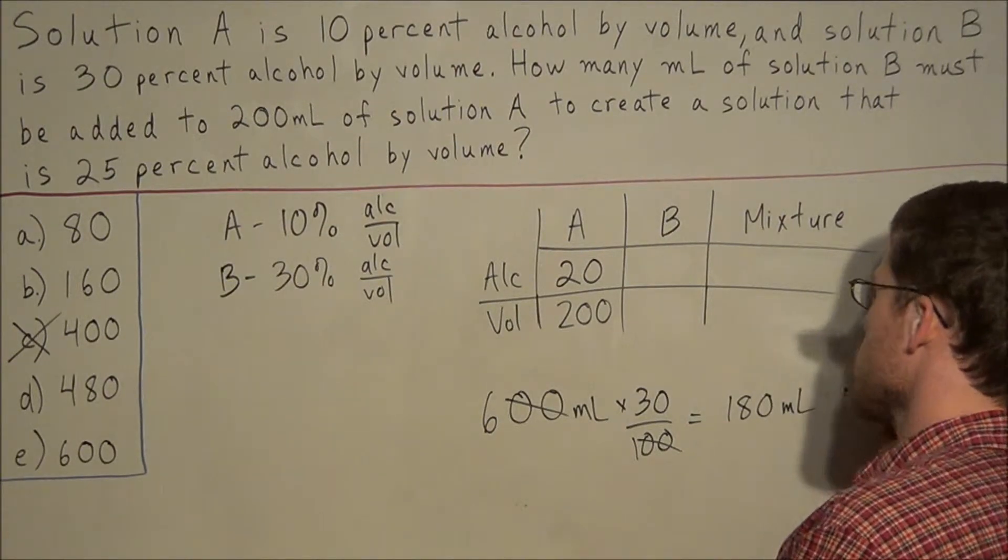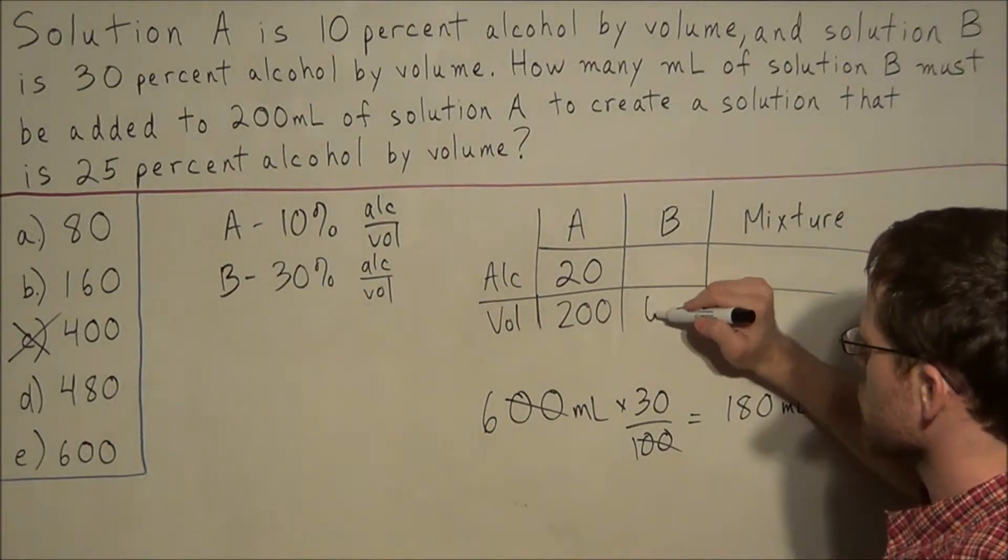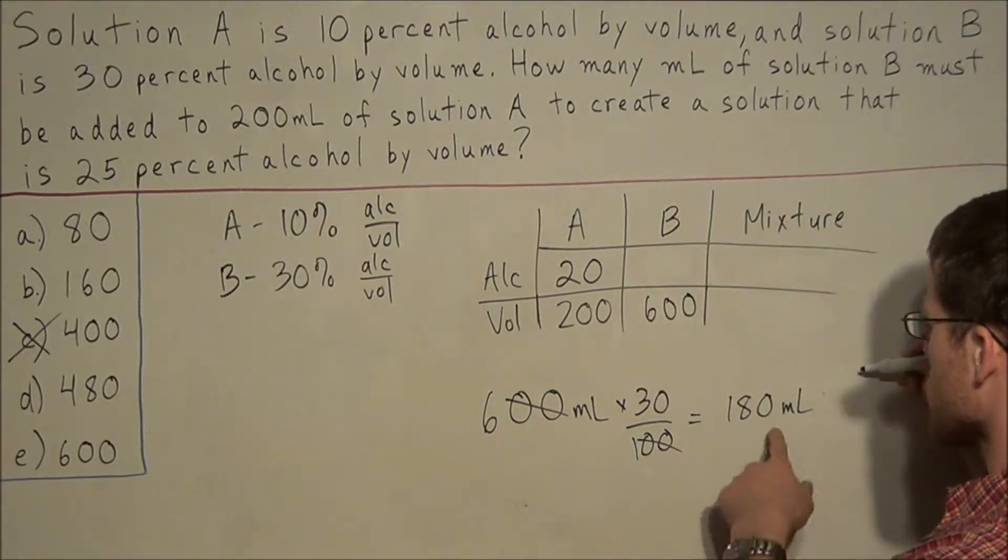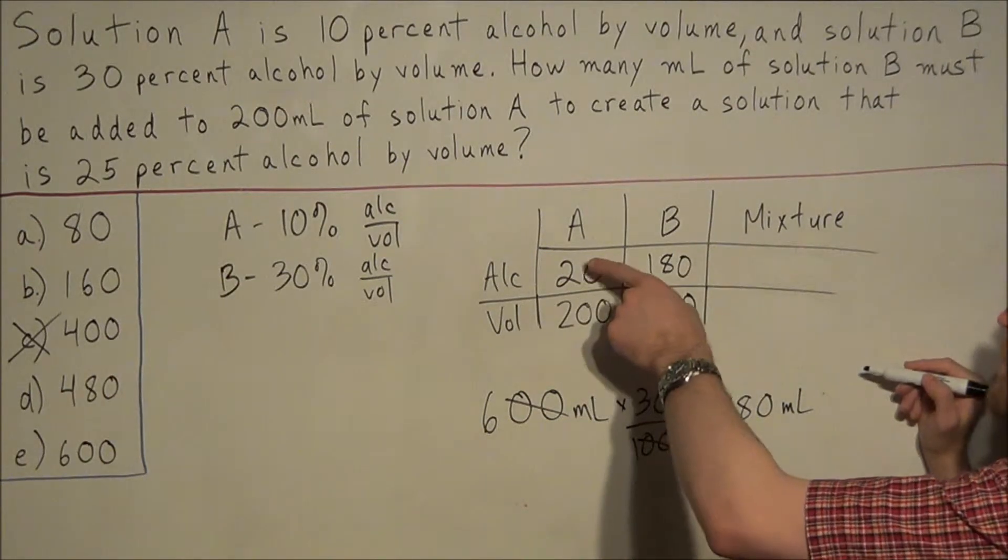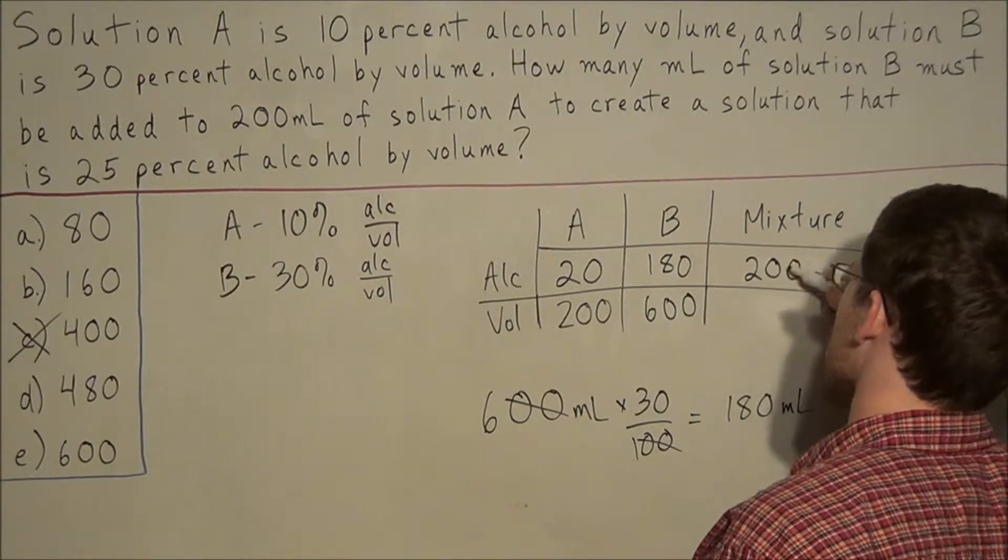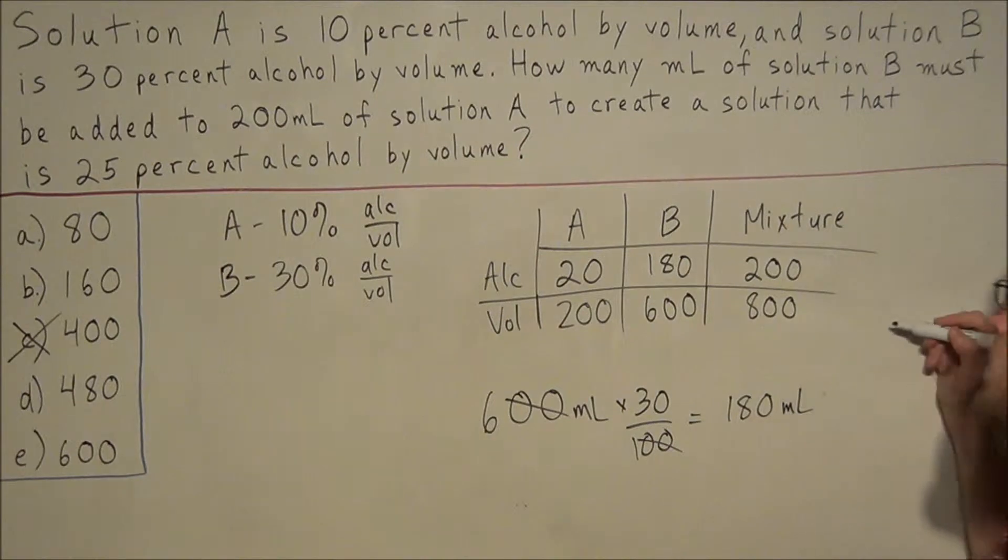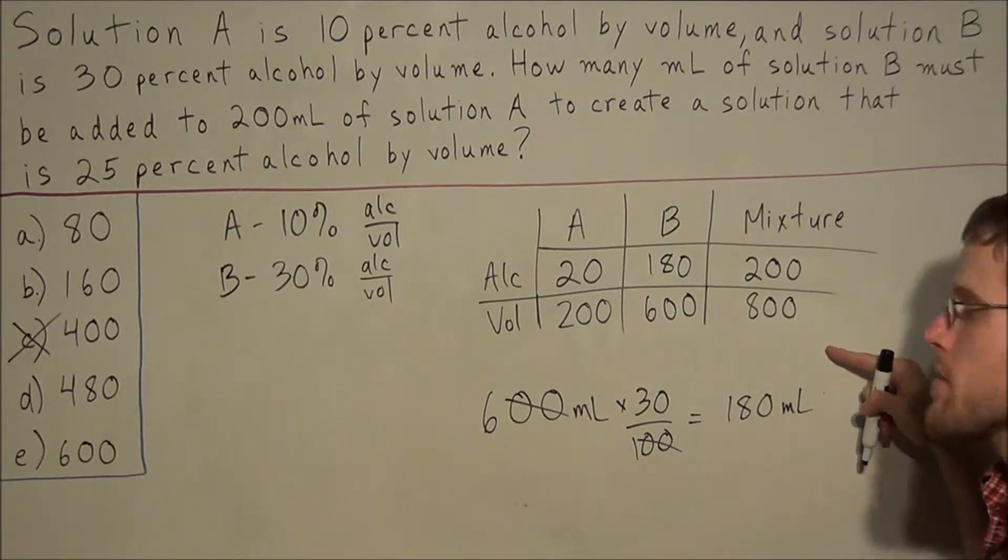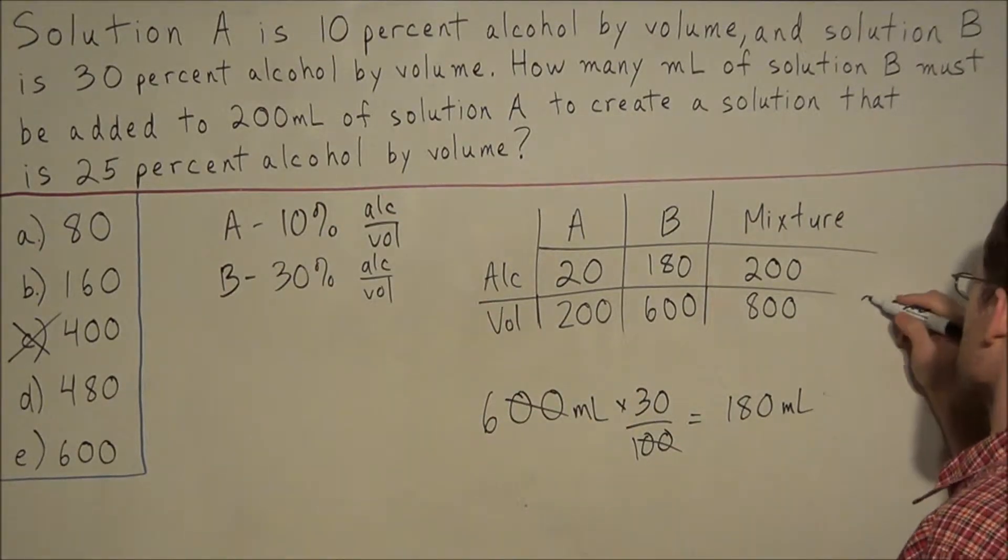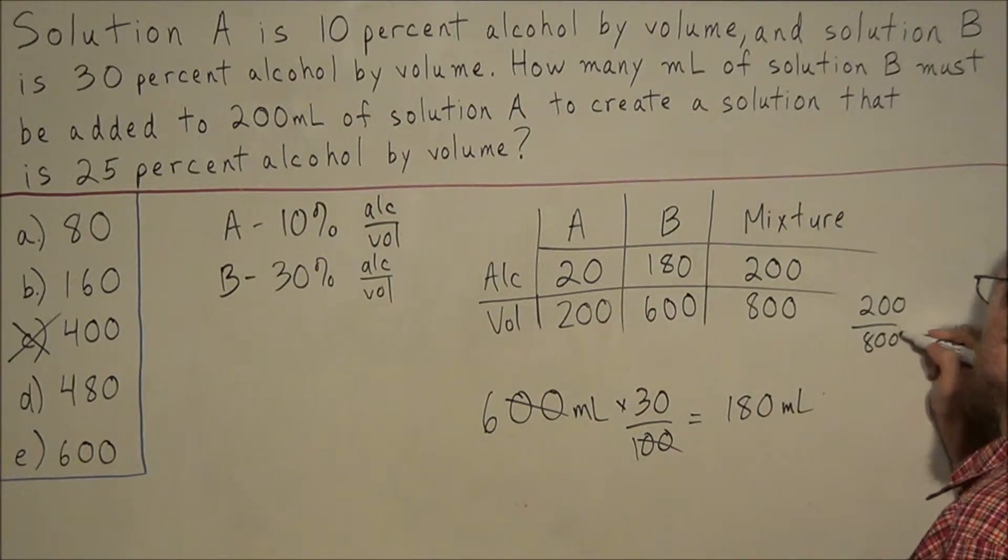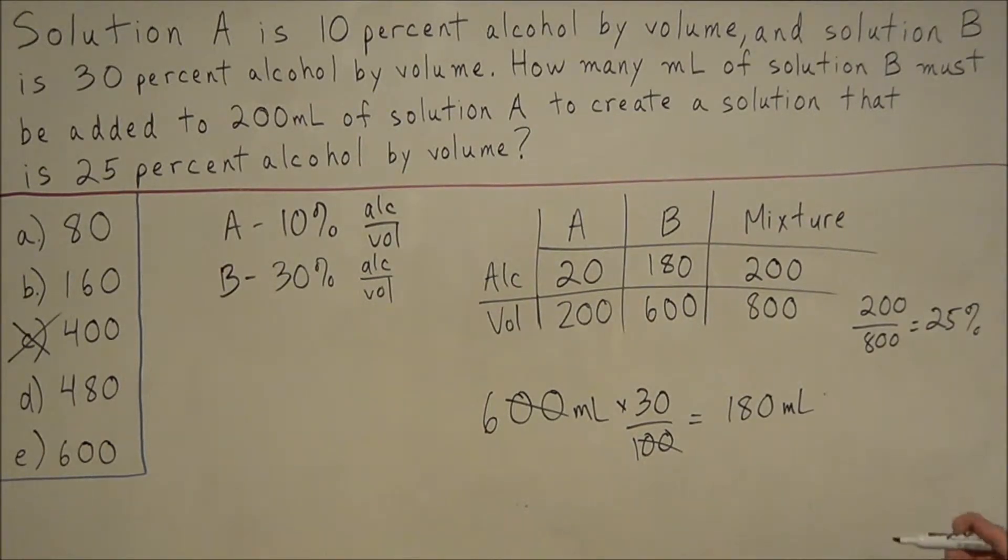And now we would have 6 times 30 equals 180. So we have 180 milliliters of alcohol in 600 milliliters of solution B. So now when we add everything up, we have 20 plus 180 is 200. And 200 plus 600 is 800. And you'll notice that 200 divided by 800 reduces to 1 fourth, which is equal to 25%.